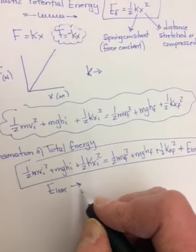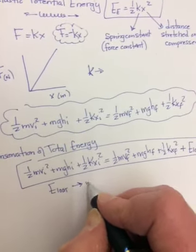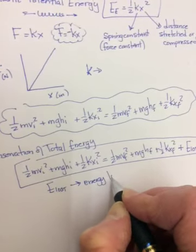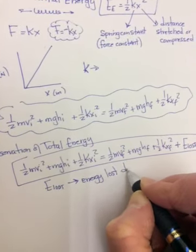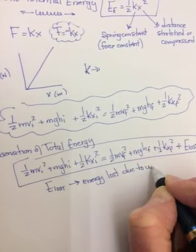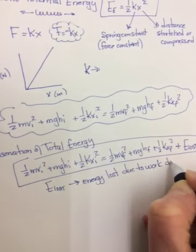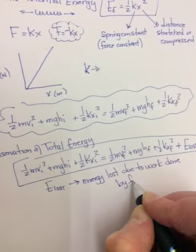So the only difference between mechanical energy and total energy is this e lost. And e lost is the energy lost due to work done by friction.